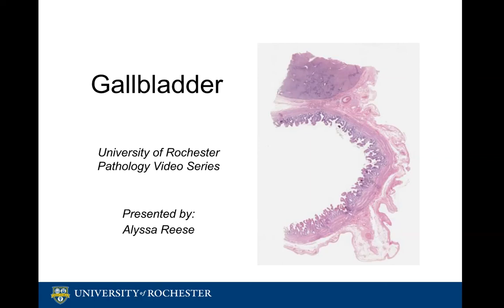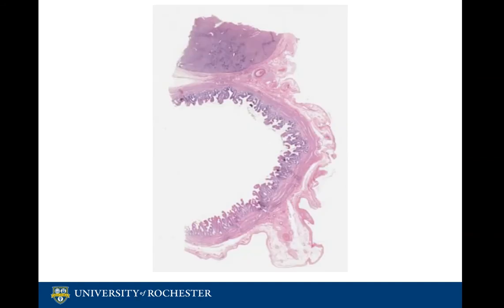Hello, my name is Alyssa Reese and welcome to the University of Rochester Pathology Video Series. This video will review the normal histology of the gallbladder using virtual slide number 71. The gallbladder is a small organ located in the upper right portion of the abdomen beneath the right lobe of the liver.